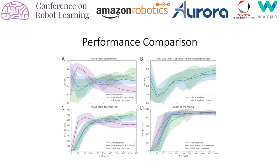We compare our agent against self-play with a single-agent world model. Single-agent self-play has a simpler world model and learns basic maneuvers earlier. With growing experience, our approach catches up and surpasses it by better considering the underlying interactions. We also compare against a variant of our method that has access to both agents' observations. Even this form of cheating cannot outperform the observer-based method.